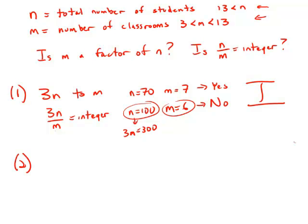Well, statement number two now tells us that if we assign 13n students to the m classrooms, you can assign the same number to each classroom. So in other words, 13m over m is an integer.